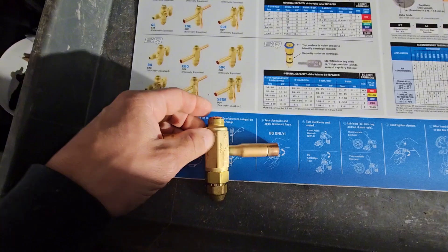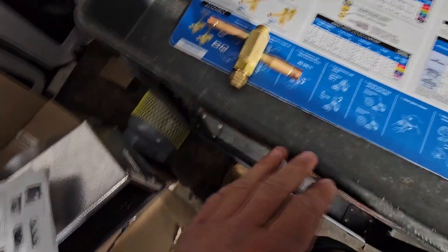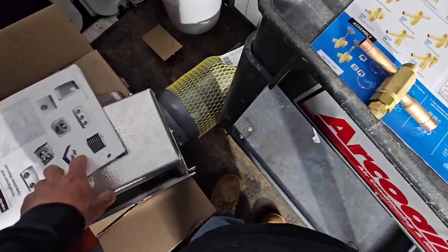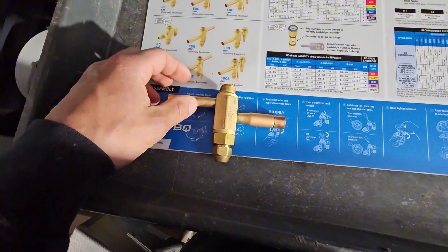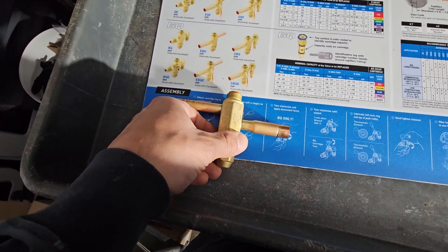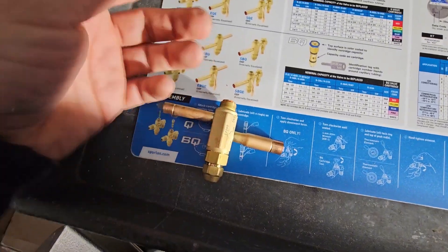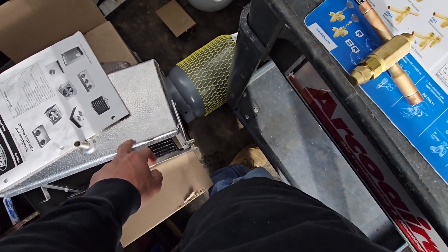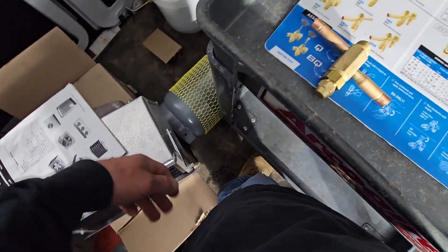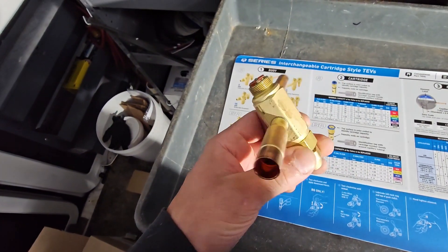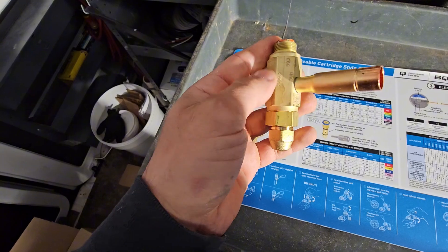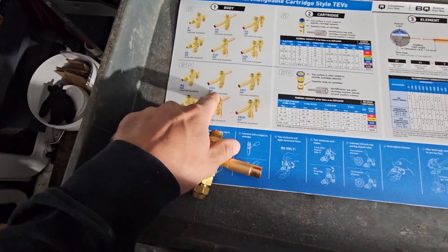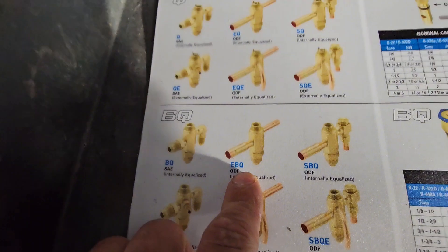So what I'm doing is I've chosen, I have my orifice already selected. So basically I'm going internally equalized, why? Because there's no distributor on this, so there's no nozzle. So basically you've got to go internally equalized when you have no distributor. And typically small evaporators like this will be internally equalized, which is basically two ports. You don't have that little port on the side. So I've selected an EBQ, so that's number one.